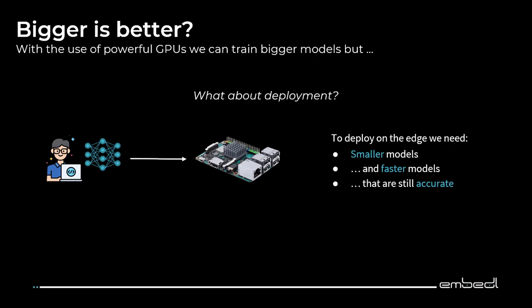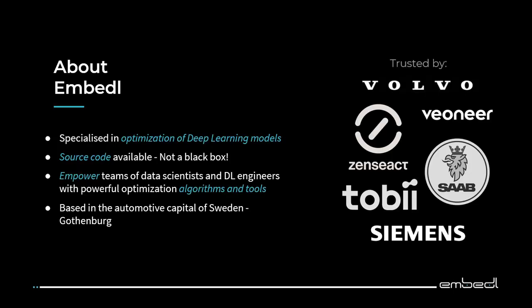This challenge is something we tackle at Embeddle. We at Embeddle are a team of engineers and researchers, and we're here for optimizing deep learning for deployment. We have an SDK — the Embeddle model optimization SDK — where the source code is available to empower your teams of data scientists, engineers, or whoever is working with your models to optimize them for deployment. We are located in Gothenburg, which is fittingly the automotive capital of Sweden. We will be here today and tomorrow, so come by for a chat.